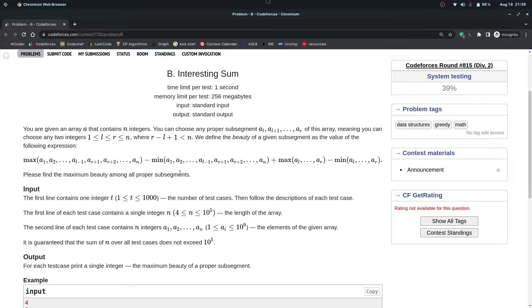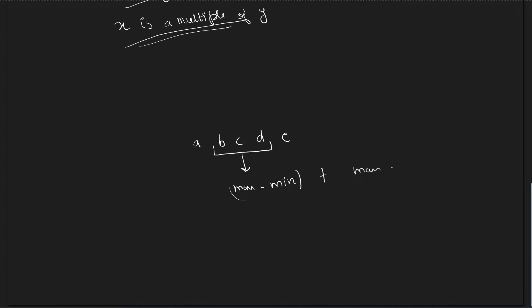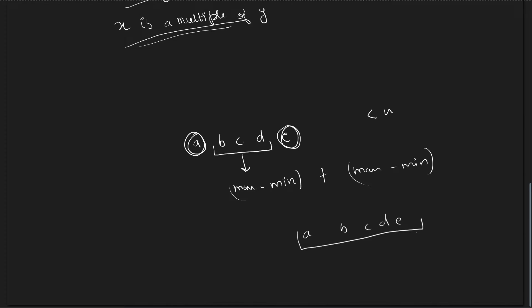Moving on to the next problem, we are given an array and we have to find a sub-segment. We must select a sub-segment of length less than N — we cannot select the whole array — and maximize the sum of (max minus min) of the sub-segment plus (max minus min) of the remaining elements.